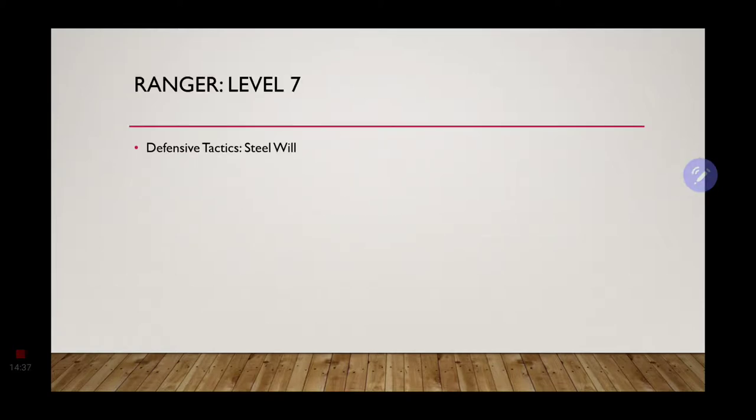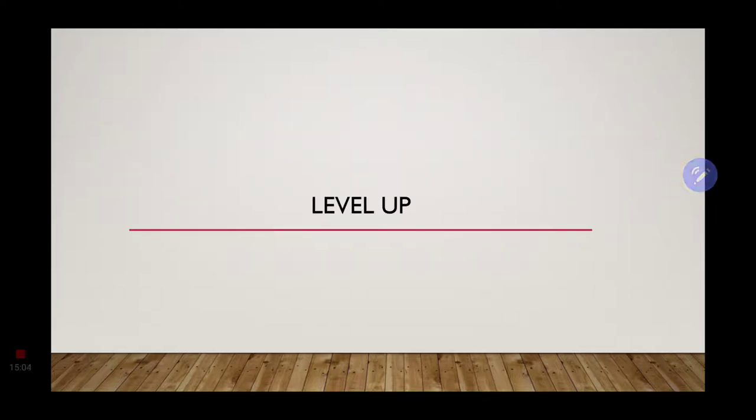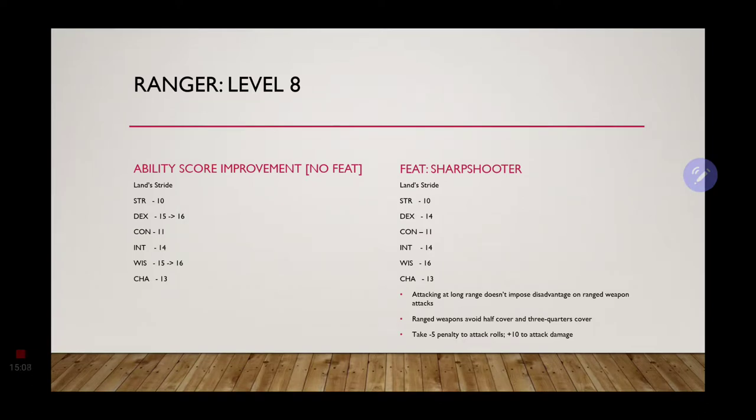Leveling up once more, we are level seven ranger. We get the defensive tactics. We're going to choose steel will for Gordon Ramsay because nothing can scare him, except maybe a disastrous kitchen. You fear Gordon Ramsay. Gordon Ramsay does not fear you. Leveling up once more, we are now at level eight. If you have not taken any feats so far, you're going to go ahead and continue not using any feats. Increase your dexterity once more. This way it is at 16 and your wisdom modifier should be the same, 16. If you are continuing to take feats, go ahead and take the sharpshooter feat. No matter which one you choose, whether feats or no feats, your level eight ranger now has lands stride, making it easier to get through certain areas.